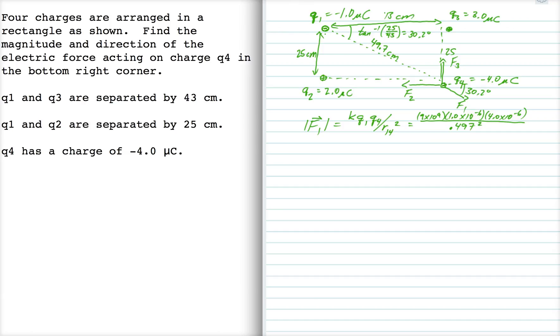So that calculation works out to be 0.146. And then if I find F2, that's going to be KQ2 Q4 over the distance squared, which is 0.43. That works out to be 0.389.